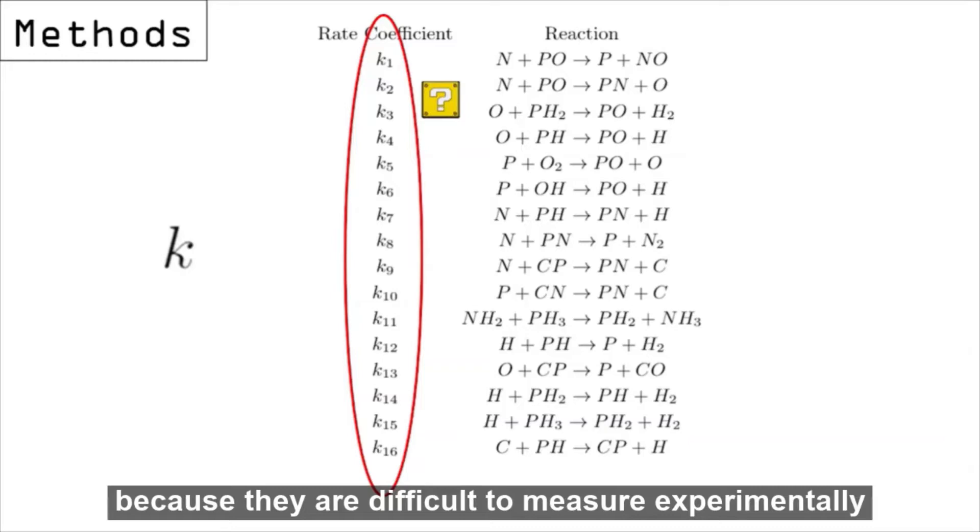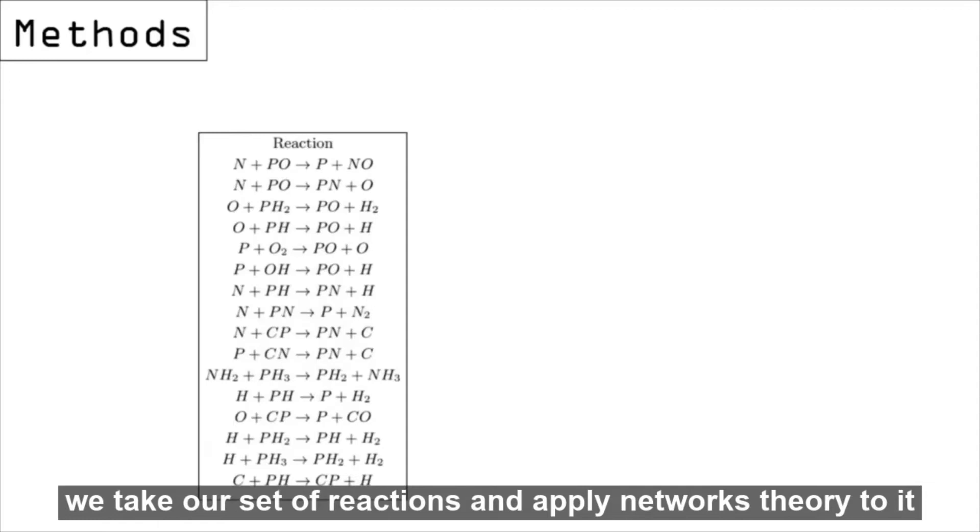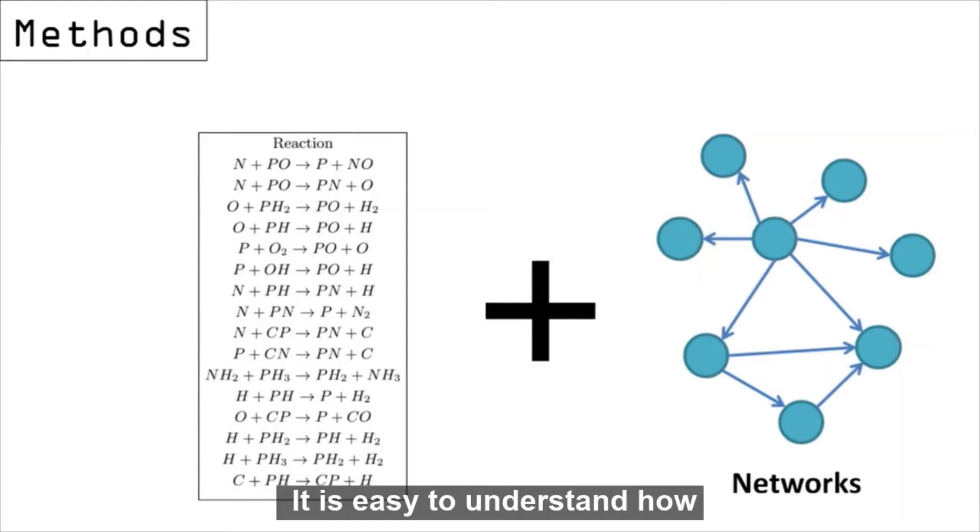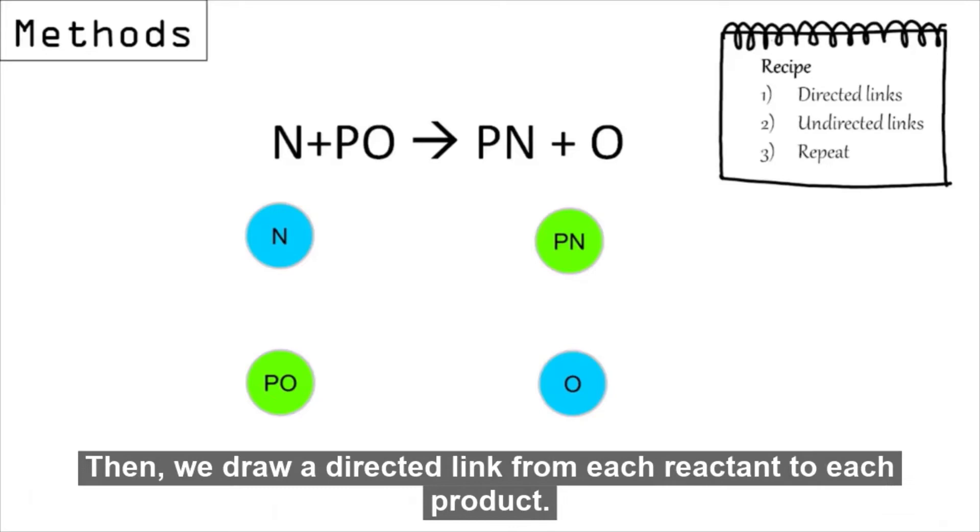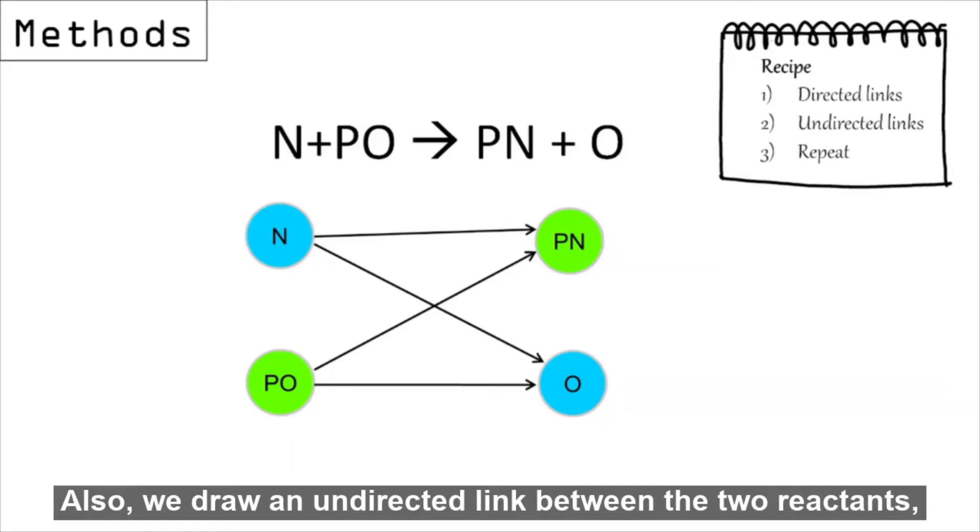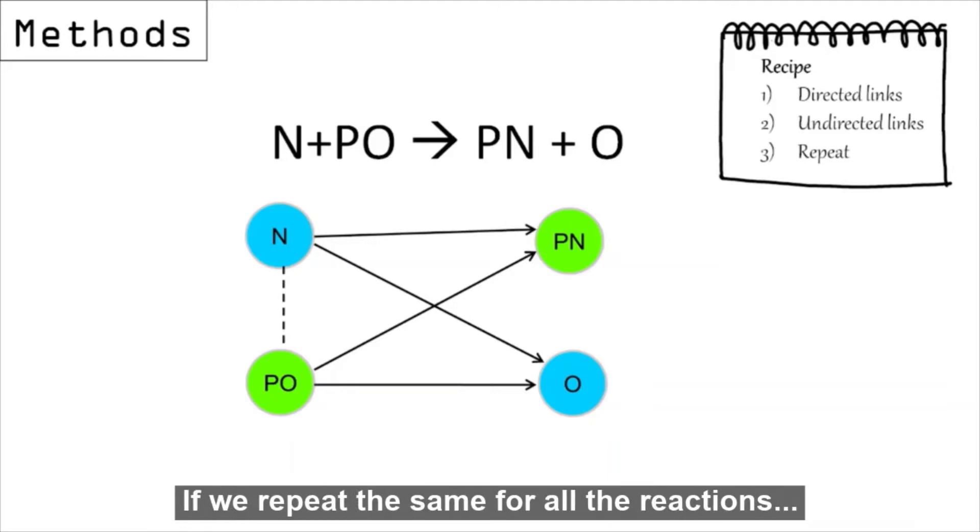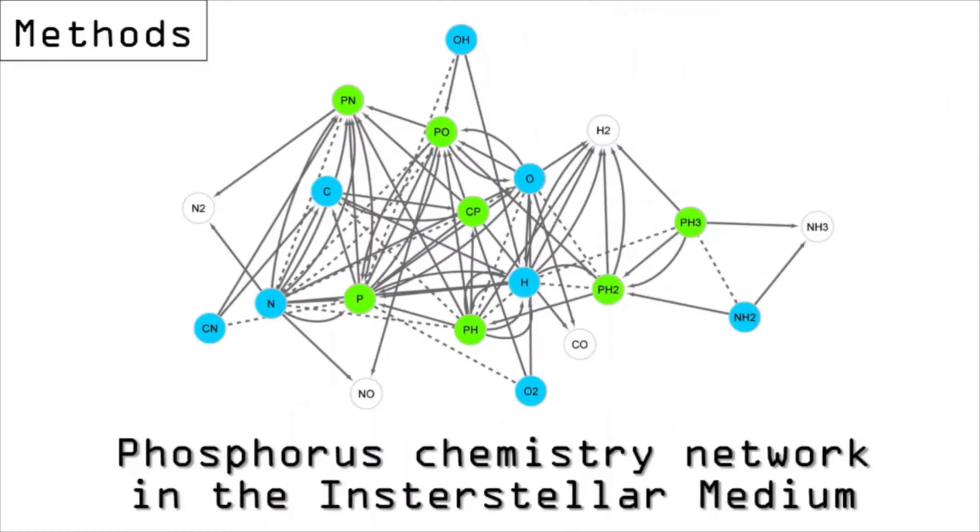Now, here is where we develop our novel method. We take our set of reactions and apply networks theory to it. It is easy to understand how. For example, for this reaction, nodes are the chemical species. Then, we draw a directed link from each reactant to each product. Also, we draw an undirected link between the two reactants, to represent that both are needed for the reaction to occur. If we repeat the same for all the reactions, we get the phosphorus chemistry network in the interstellar medium.